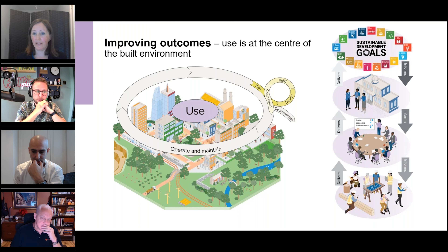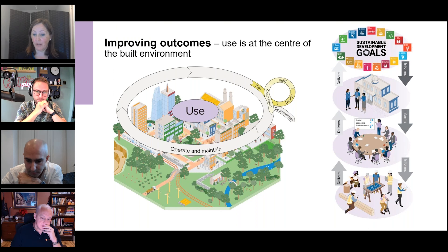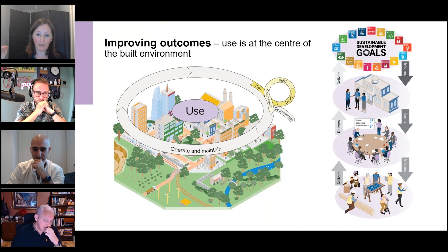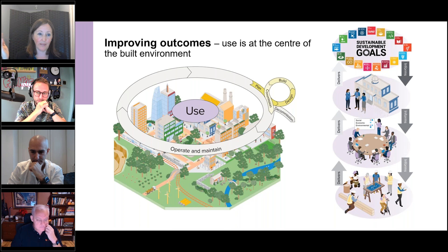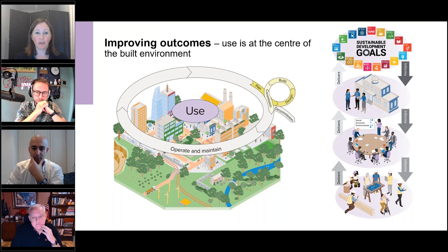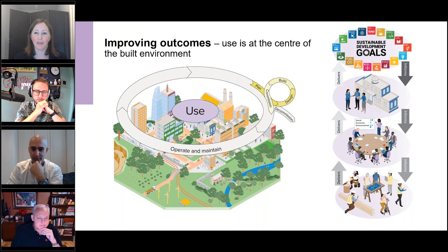The outcomes should align through to the UN Sustainable Development Goals. The person hammering the nail at the project or program level should be able to see how they're helping to achieve community outcomes, national outcomes like Net Zero by 2050, and ultimately the UN Sustainable Development Goals. With your digital twin, the use case should aim to align through all of that.